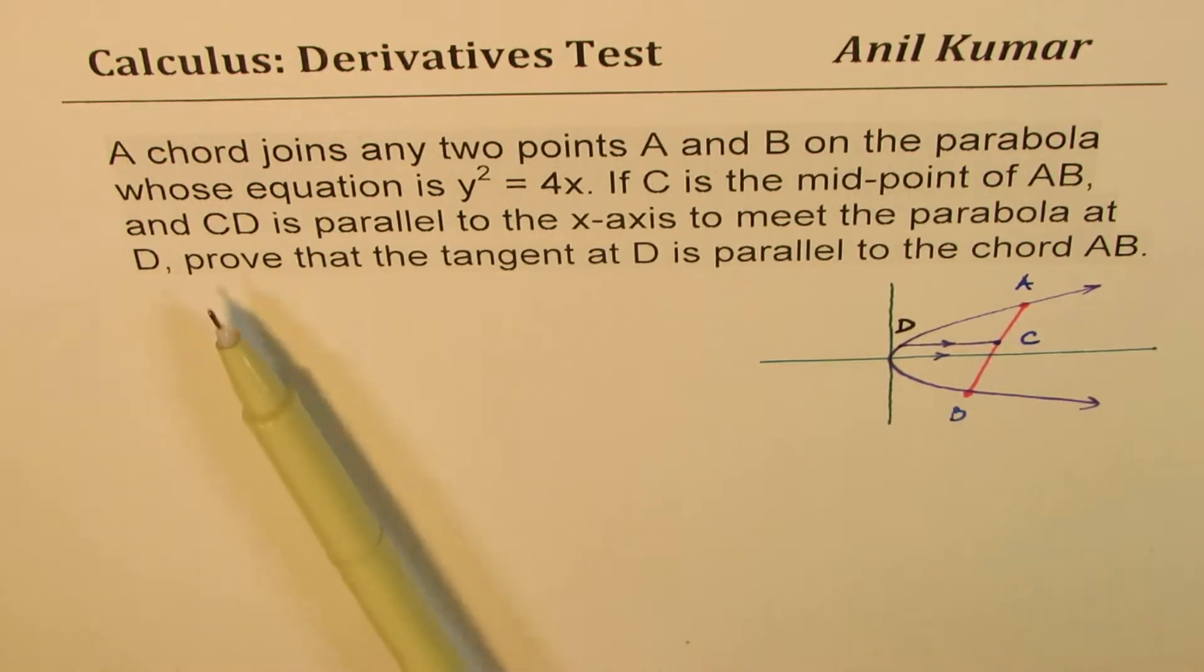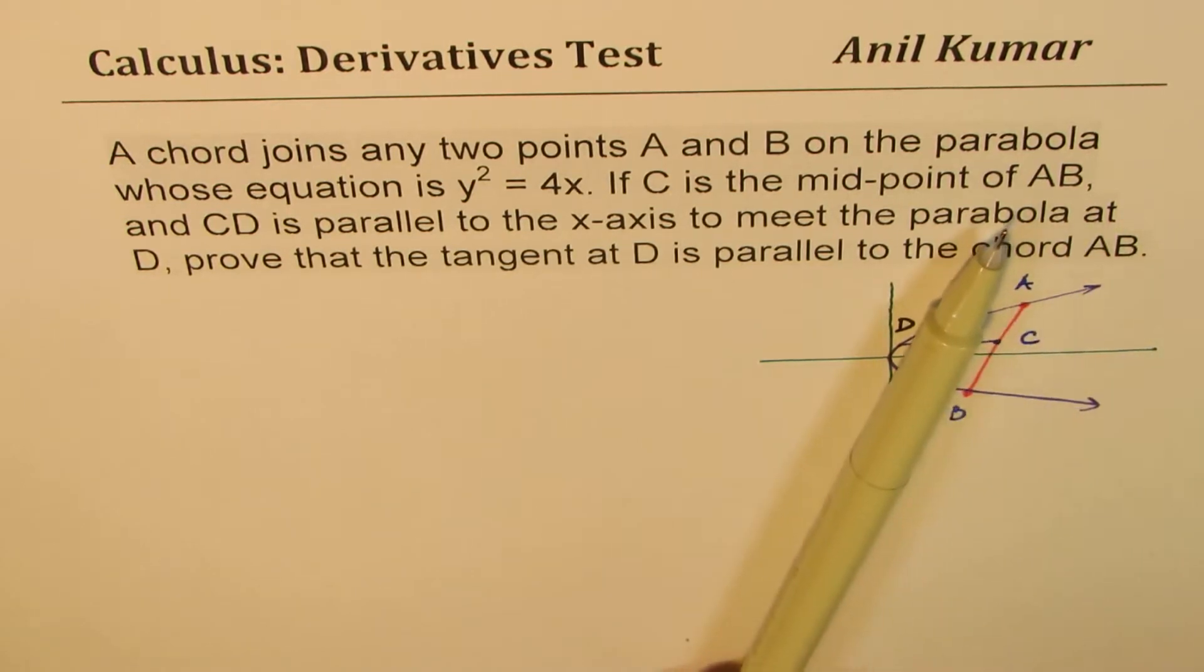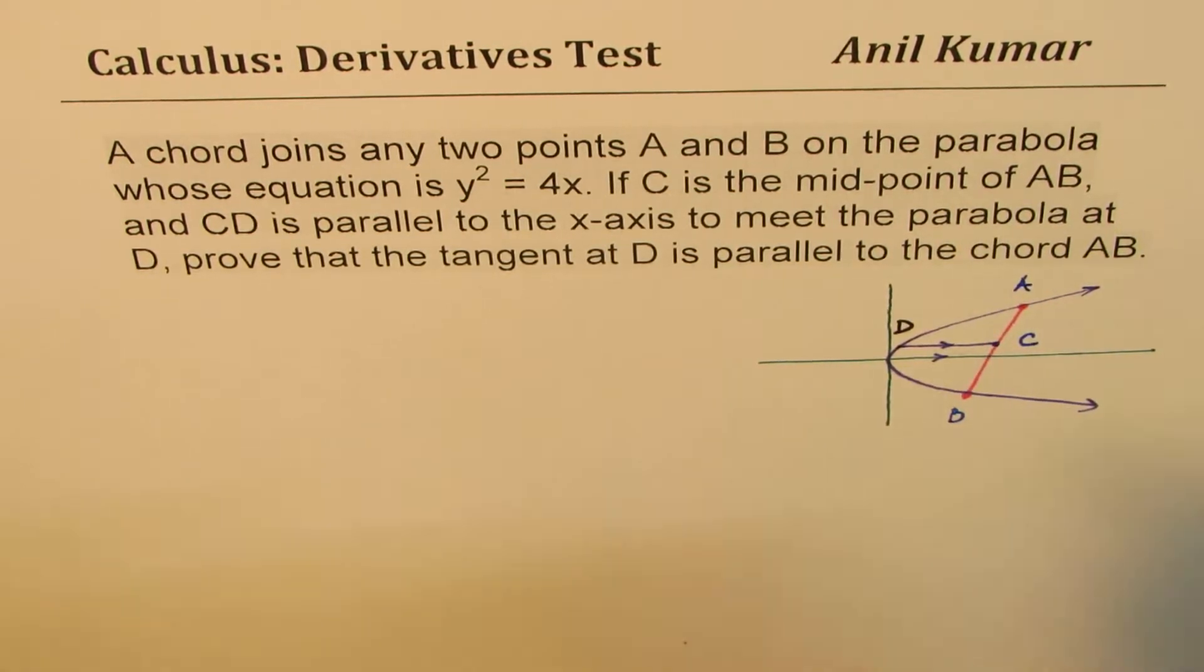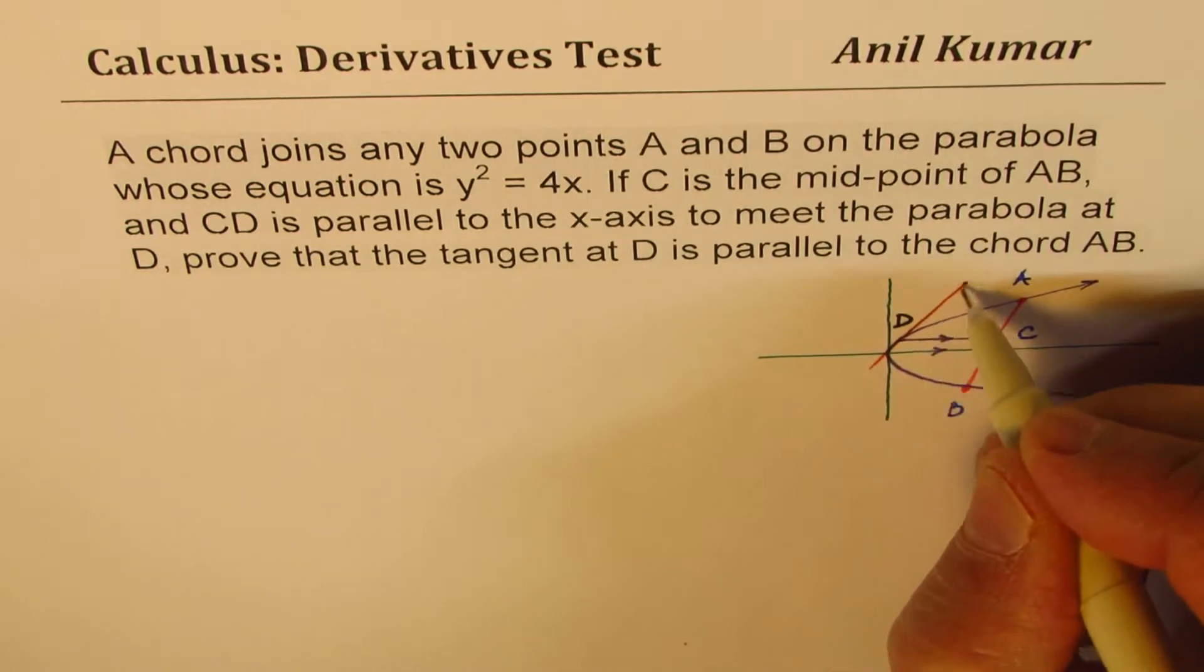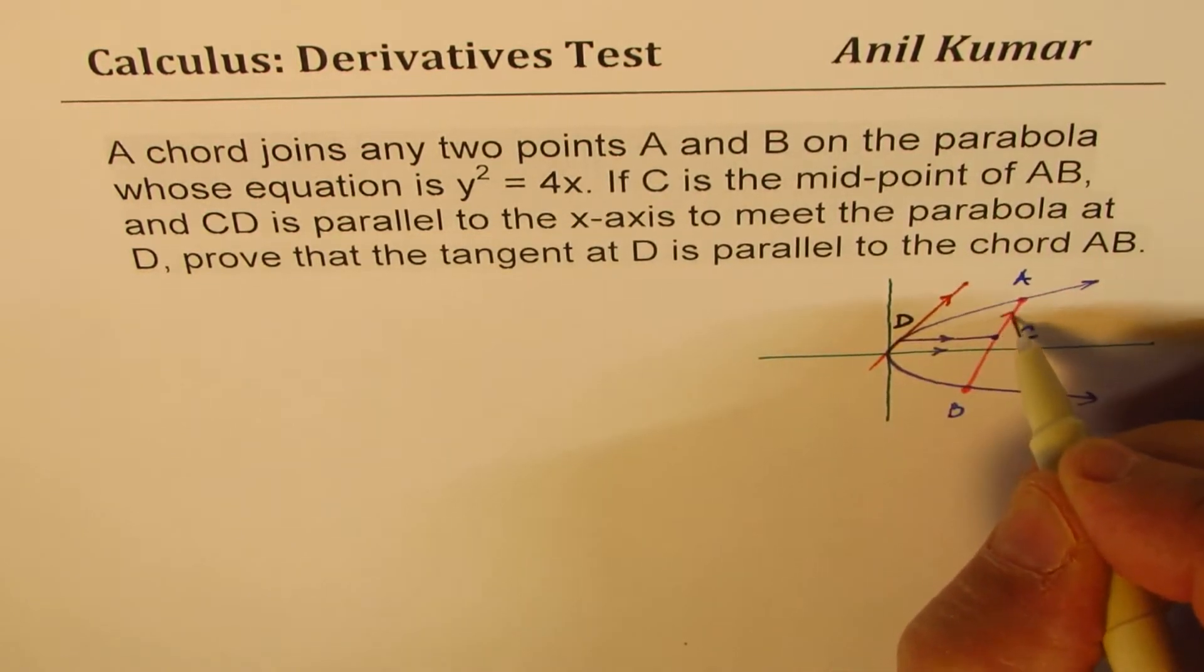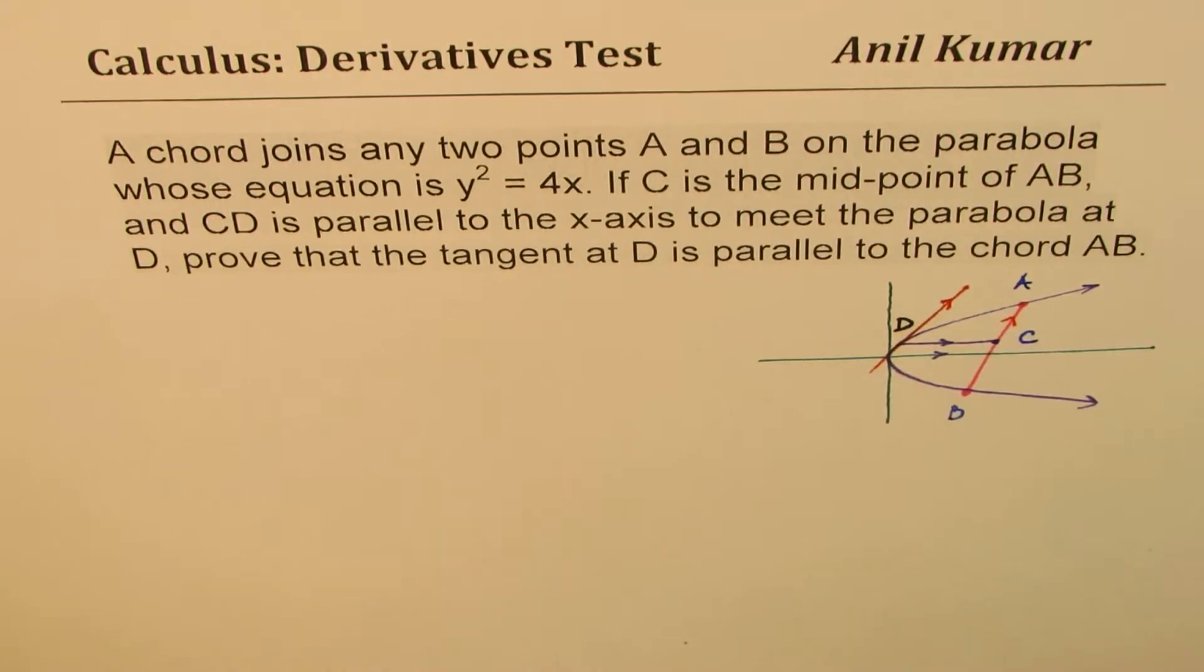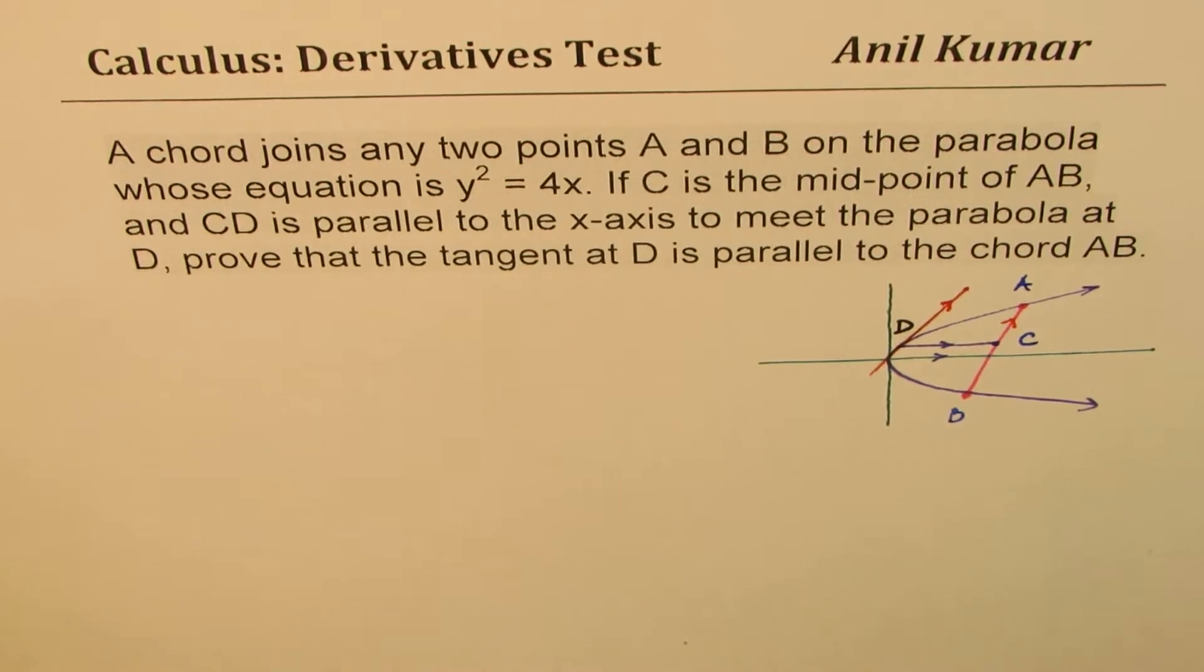Now it says that we need to prove that the tangent at D is parallel to the chord AB. That means I need to draw a tangent. It may not look parallel, but we have to show that these two are parallel. That is the question for you.